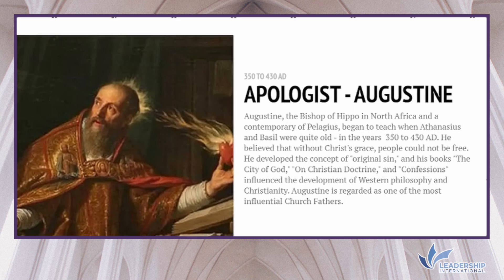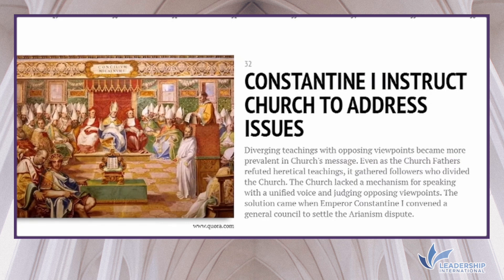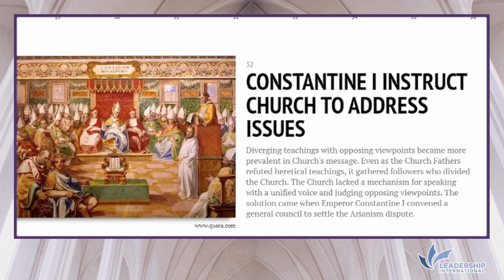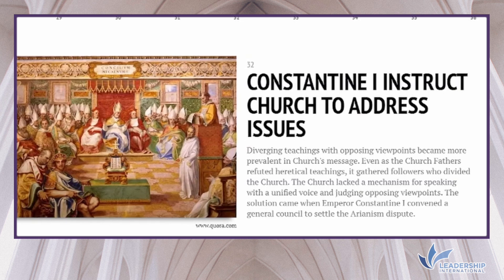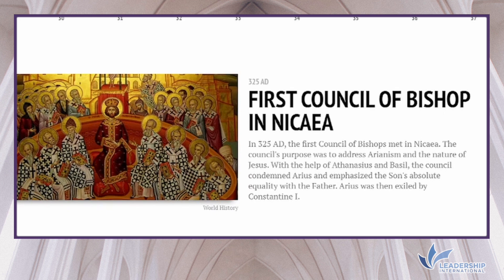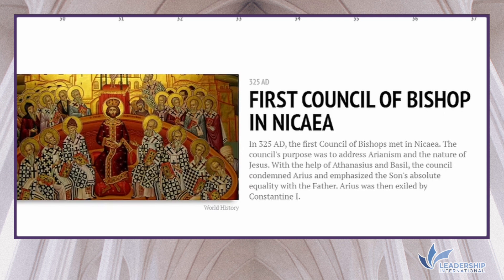Diverging teachings with opposing viewpoints became more prevalent in the church's message. Even as the church fathers refuted heretical teachings, those teachings gathered followers who divided the church. The church lacked a mechanism for speaking with a unified voice and judging opposing viewpoints. The solution came when Emperor Constantine I convened a General Council to settle the Arianism dispute. In 325 AD, the Council of Bishops met in Nicaea. The council's purpose was to address Arianism and the nature of Jesus. With the help of Athanasius and Basil, the council condemned Arius and emphasized the Son's absolute equality with the Father. Arius was then exiled by Emperor Constantine I.